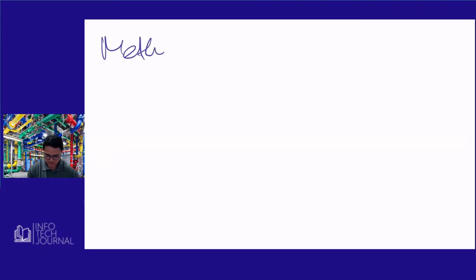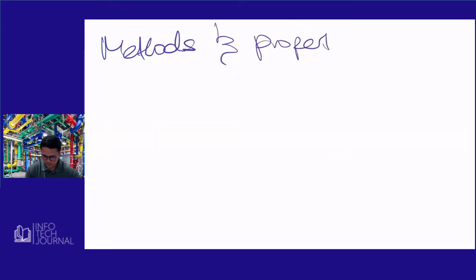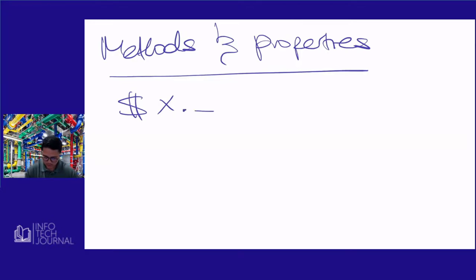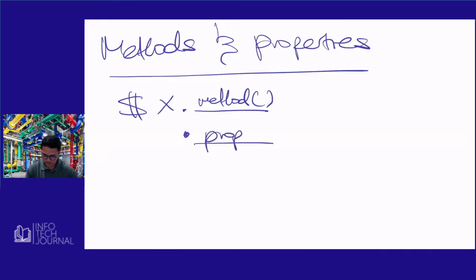We've looked at methods and properties, and we've also looked at how to access those methods or properties. If you were to have a variable, let's say variable x, you can just use the dot operator and input the method with two brackets, or the dot operator with some properties to take out the properties.